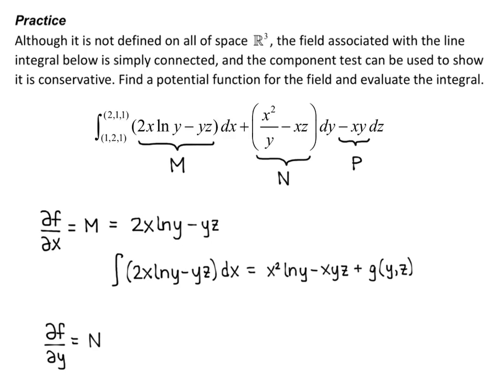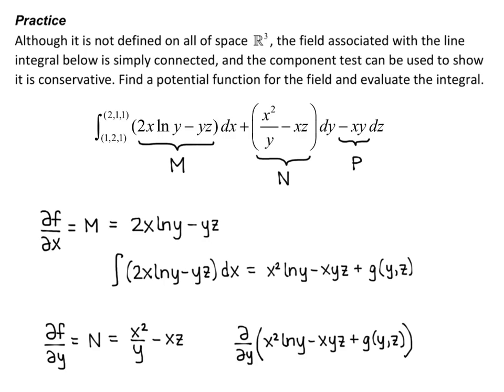Now partial F partial y equals N, which is x squared over y minus xz. I take the partial derivative of the function found in the last step: partial partial y of x squared natural log of y minus xyz plus g of y, z gives me x squared times 1 over y minus xz plus partial g partial y. Notice that x squared over y minus xz is exactly what I want, so partial g partial y equals 0, which means g is just a function of z at most.